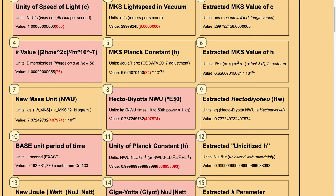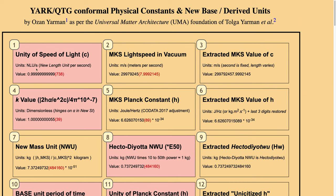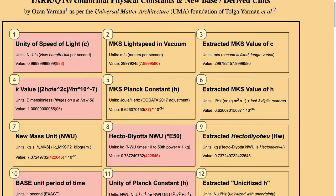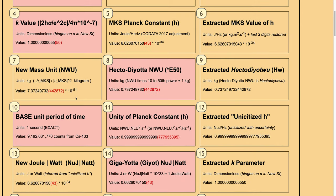We multiply it by 10 to the power of 50 and arrive at almost 1 kilogram, with uncertainty parts designated in red. We call this new mass unit 1 nulu. We also call the distance unit that the speed of light travels in one second 1 nulu — that is about 300 million meters. This new mass unit is 10 to the power of 51 orders of magnitude below 10 kilograms, so for 1 kilogram it is multiplied by 10 to the power of 50. We have 0.7 hectodiotanuvu, which is almost 1 kilogram.